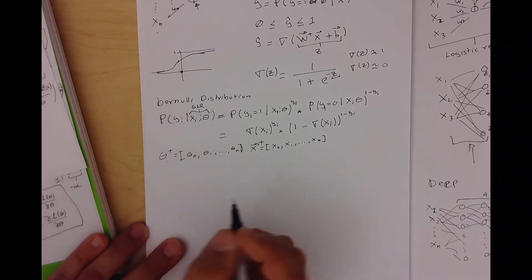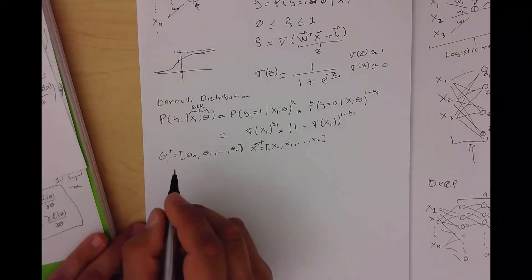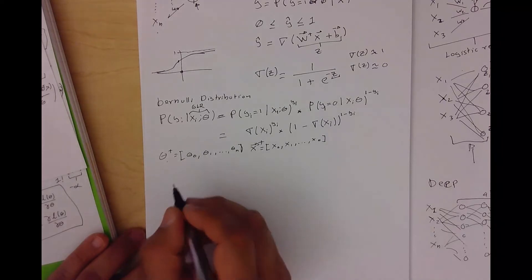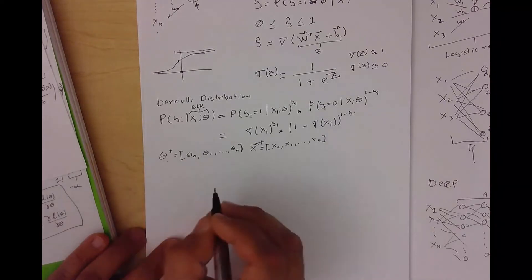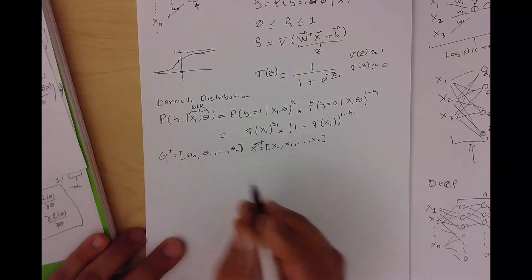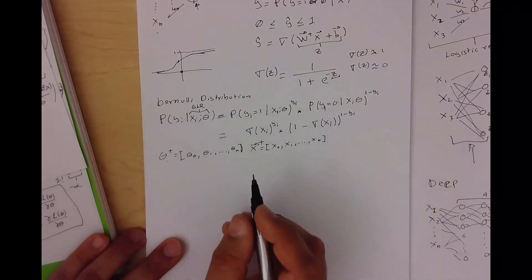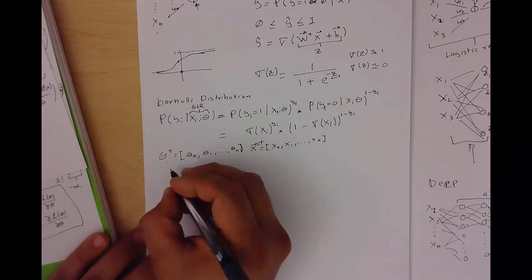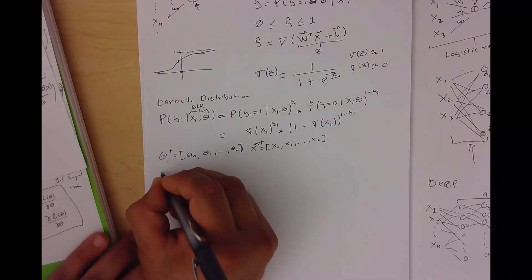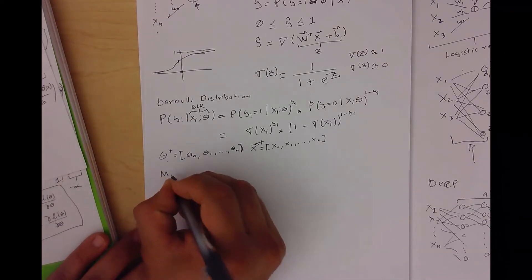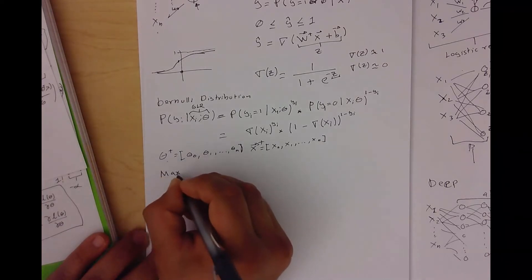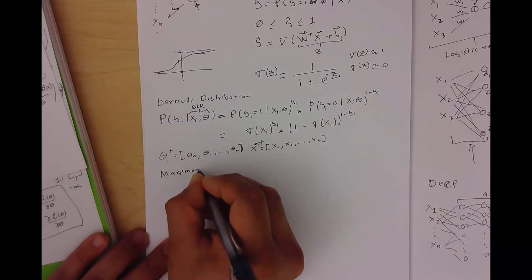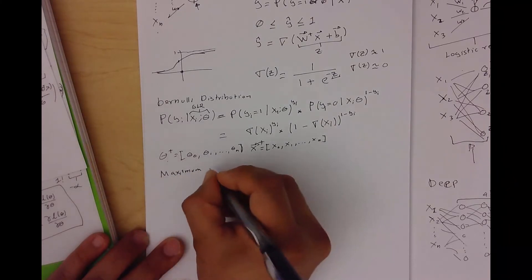Using minimum squares does not always converge — it can get stuck in local minima. So instead we use maximum likelihood estimation.